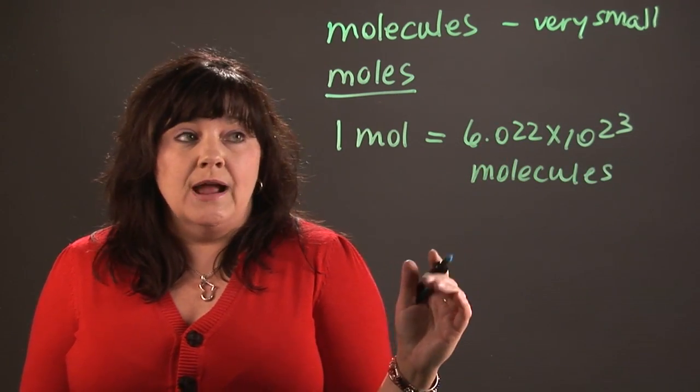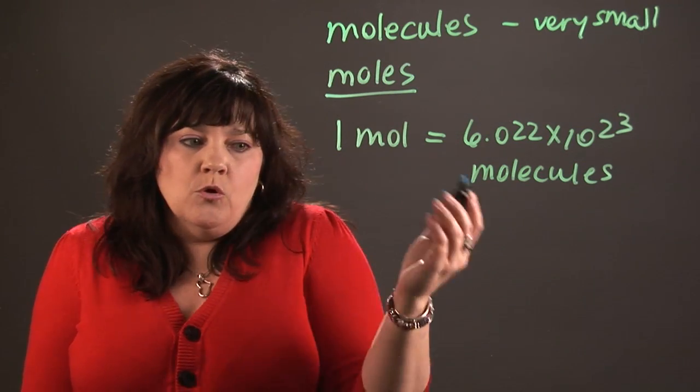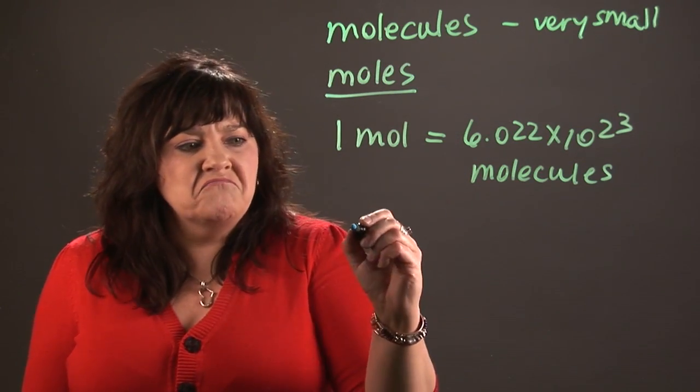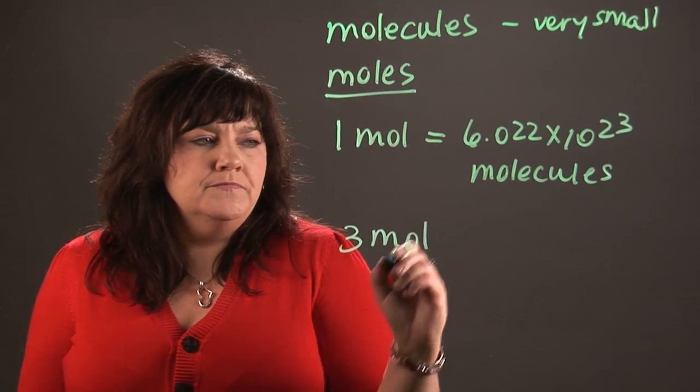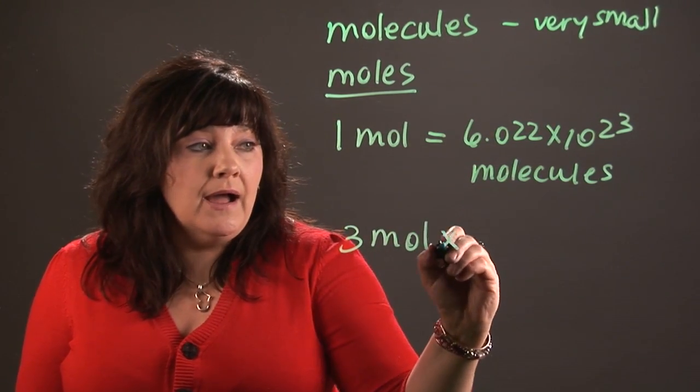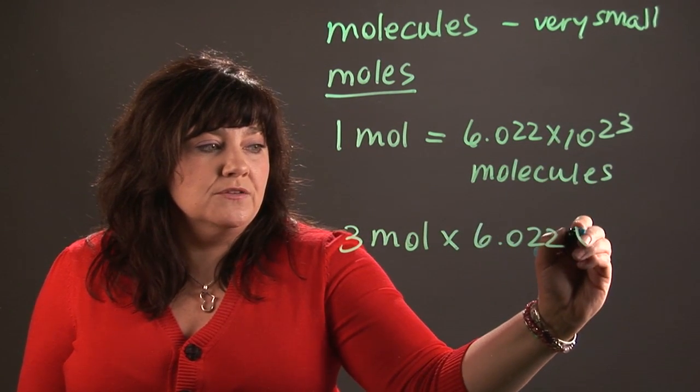So anytime you want to figure out the number of molecules you have, what you do is you take the number of moles. So let's say that I have 3 moles. I would multiply that by Avogadro's number, 6.022 times 10 to the 23rd molecules.